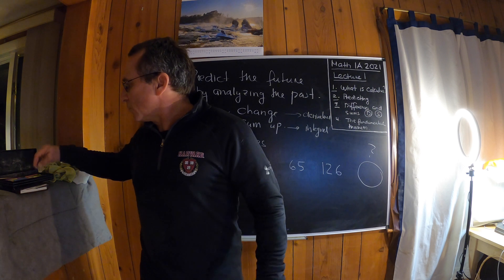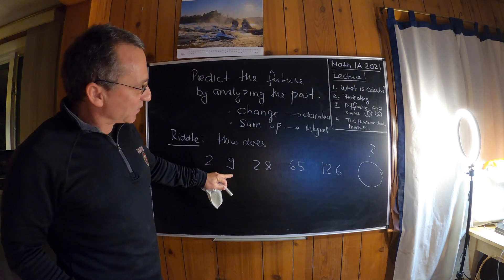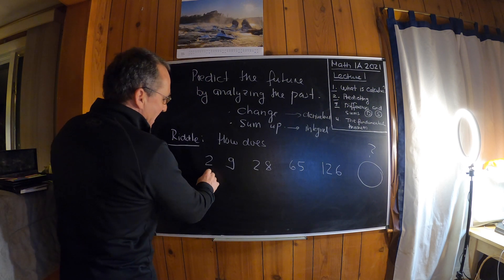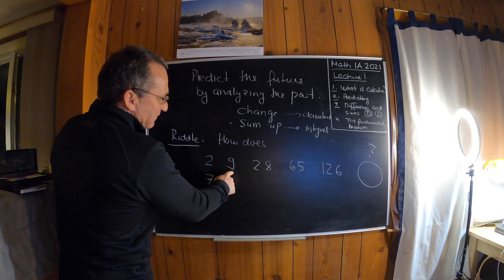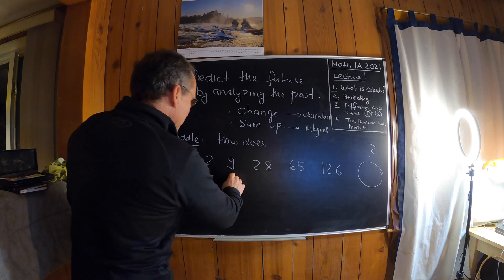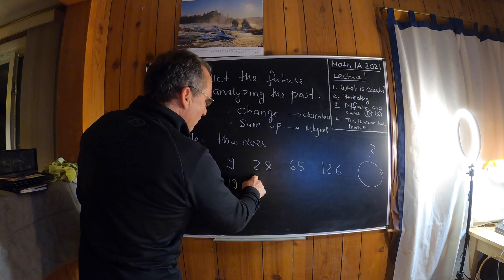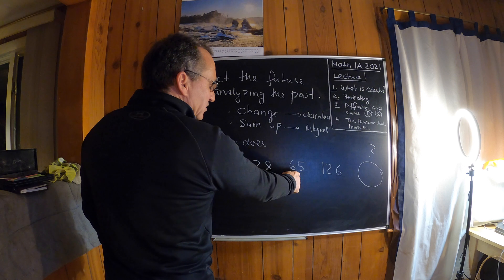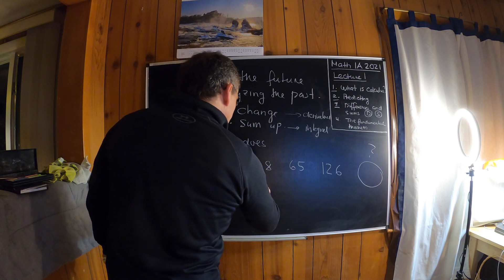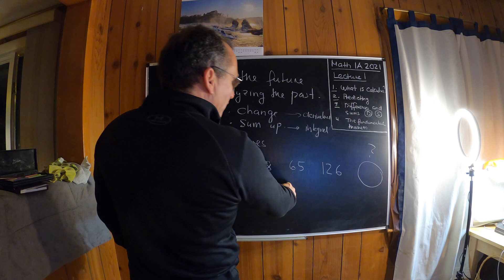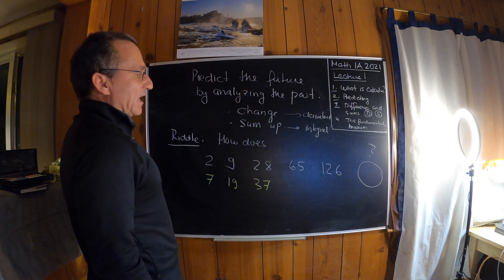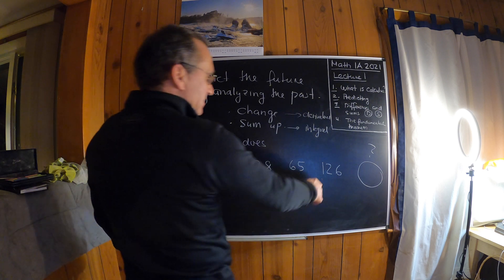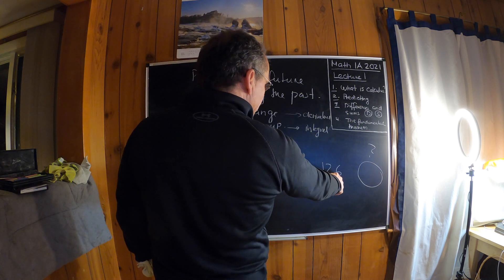We can look at the rate of change — how does it change from here to here, etc. When we go from the first to the second value we get 7. From the second to the third we get 90. From the third to the fourth we get 32 plus 5, which is 37. From the fourth to the fifth we have 35, 55, 61.